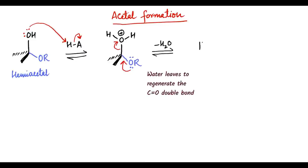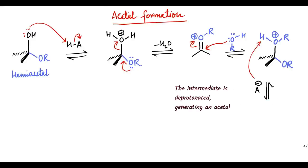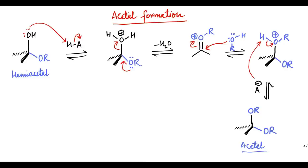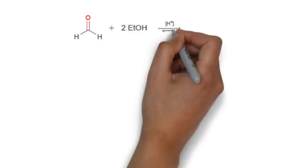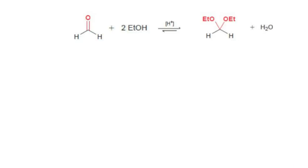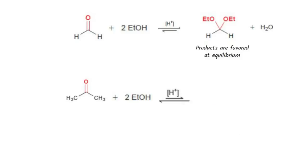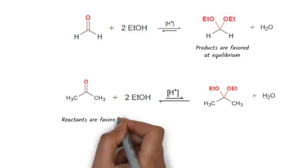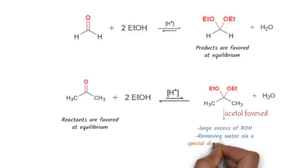Then water leaves to regenerate the C=O double bond. The second molecule of alcohol attacks the C=O double bond to generate another tetrahedral intermediate. This tetrahedral intermediate is then deprotonated, generating an acetal. The equilibrium arrows in the full mechanism of acetal formation indicate that the process is governed by an equilibrium. For many simple aldehydes, the equilibrium favors formation of the acetal, so aldehydes are readily converted into acetals by treatment with two equivalents of alcohol in acidic conditions. However, for most ketones, the equilibrium favors reactants rather than products. In such cases, formation of the acetal can be accomplished by using a large excess of alcohol, removing water via special distillation techniques like Dean-Stark Trap.